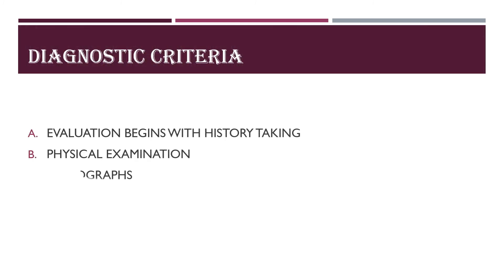Diagnostic criteria: evaluation begins with thorough history taking - regarding the baby's uterine position and alignment, how the baby was delivered (traumatic or normal birth), the baby's condition afterwards, and from when the condition was noticed. Physical examination involves checking the range of motion of the head and neck and palpating for swelling or tumor, corresponding to the three clinical stages: stiffness with palpable swelling, stiffness without swelling, or neither stiffness nor tumor.